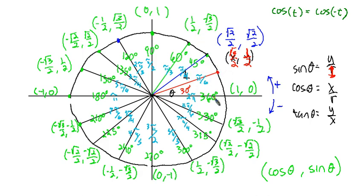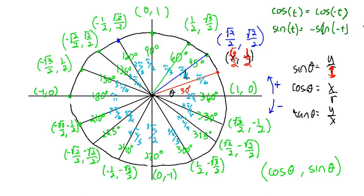How about the sine of an angle? Here is 30 degrees and here's negative 30 degrees. How does the sine compare? Well, they're the same only one of them is negative. So the sine of an angle is equal to the negative of the sine of negative t. The sine of an angle is equal to the opposite of the sine of the opposite of the angle. For 30 degrees the sine is positive 1 half, and the sine of negative 30 degrees is negative 1 half. If you know the sine of 60 degrees is root 3 over 2, then the sine of negative 60 degrees is negative root 3 over 2.